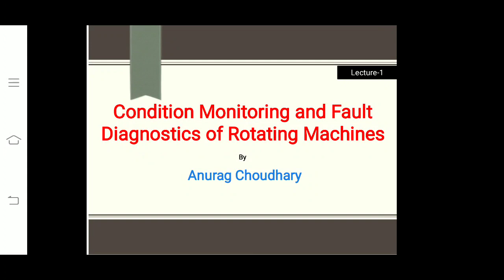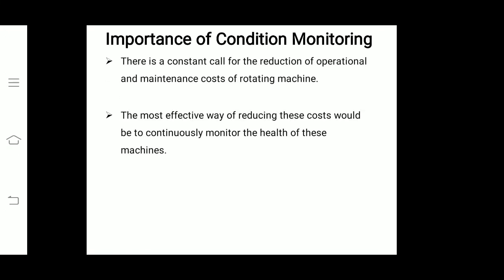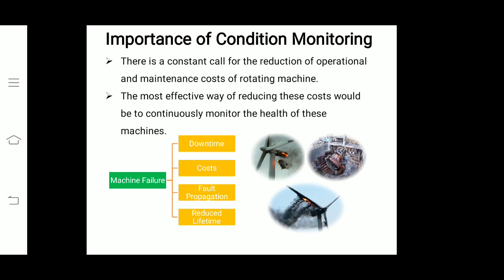As we do every day, we rely on a wide range of machines, but the truth is that every machine eventually breaks down unless it is being maintained. When a machine fails, it directly affects downtime, causes fault propagation, and reduces the overall lifetime of that particular machine. In industrial applications, there is a constant goal for reduction of operational and maintenance costs of rotating machines.